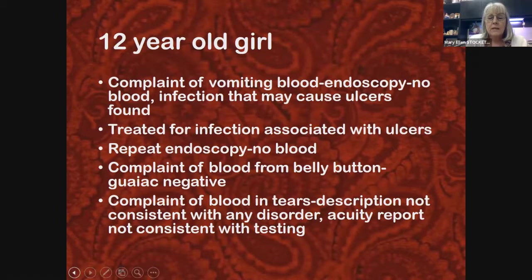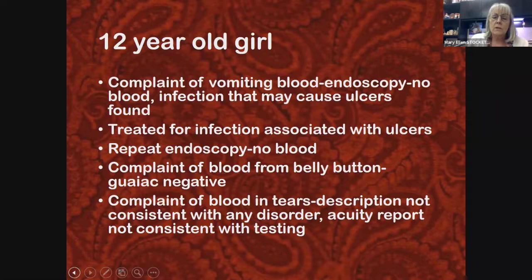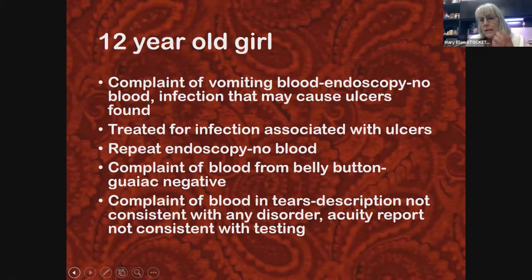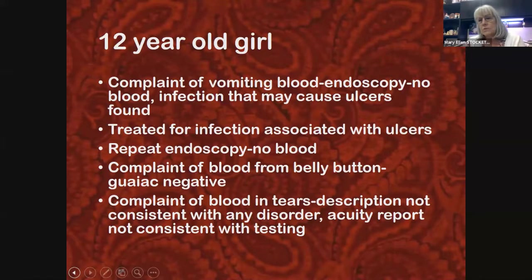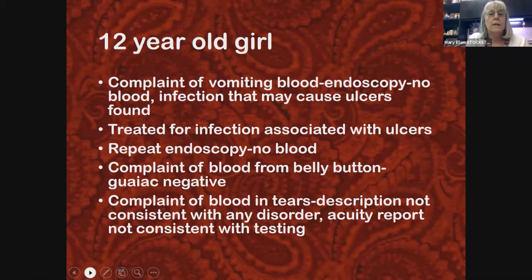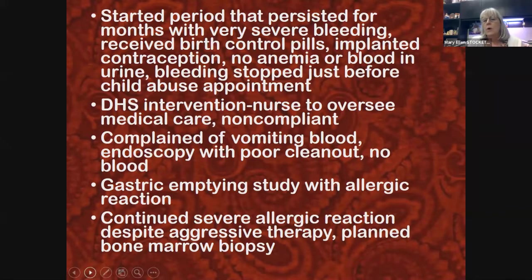Next, the guardian claimed the child had blood in her tears. The eye doctor said the complaints didn't match any known abnormalities. When the eye doctor checked her visual acuity — asking which lens is better, number one or number two — what the child reported didn't match the testing. The eye doctor concluded the child was fabricating the visual acuity problem.